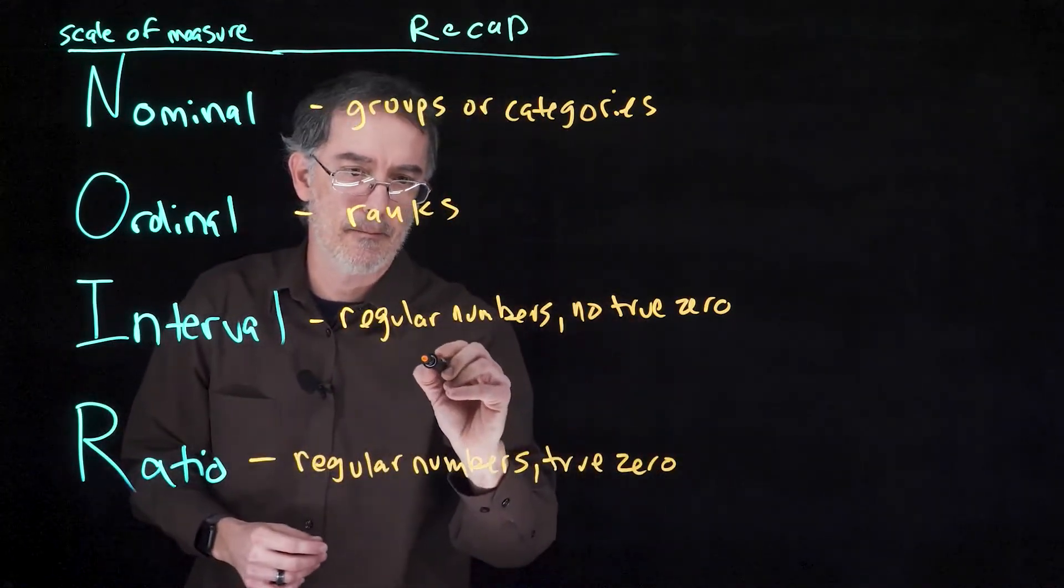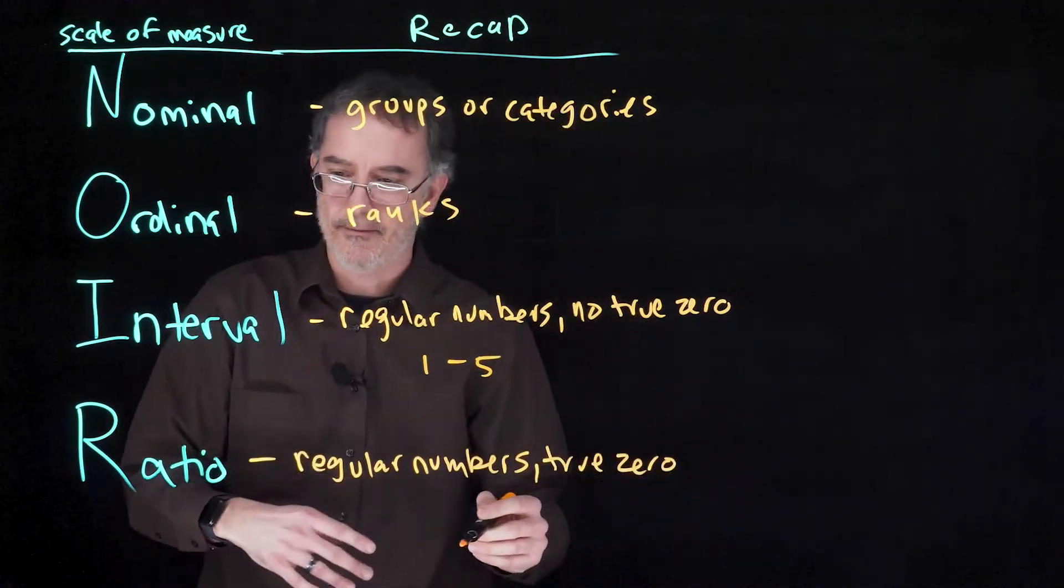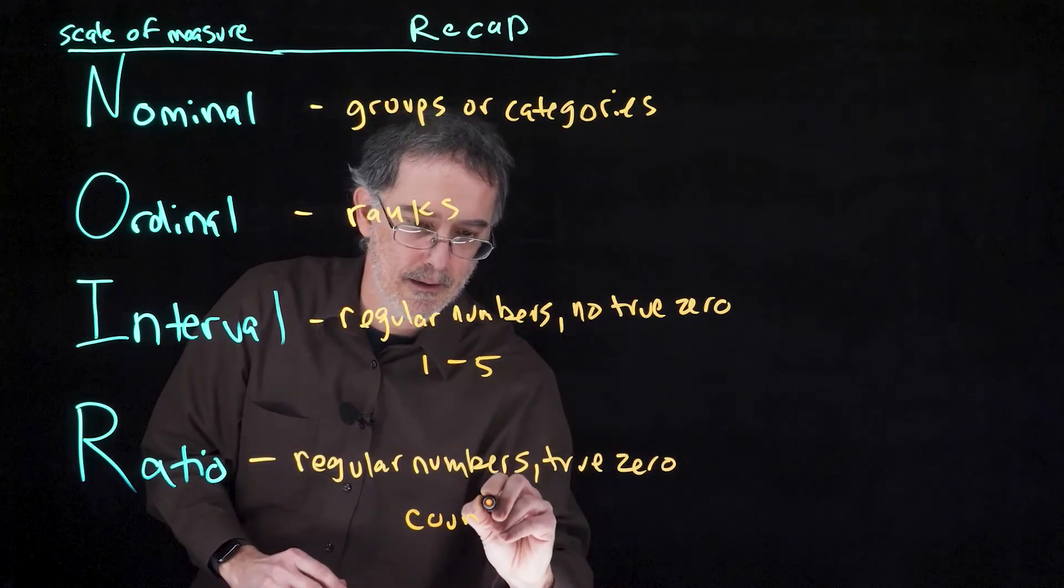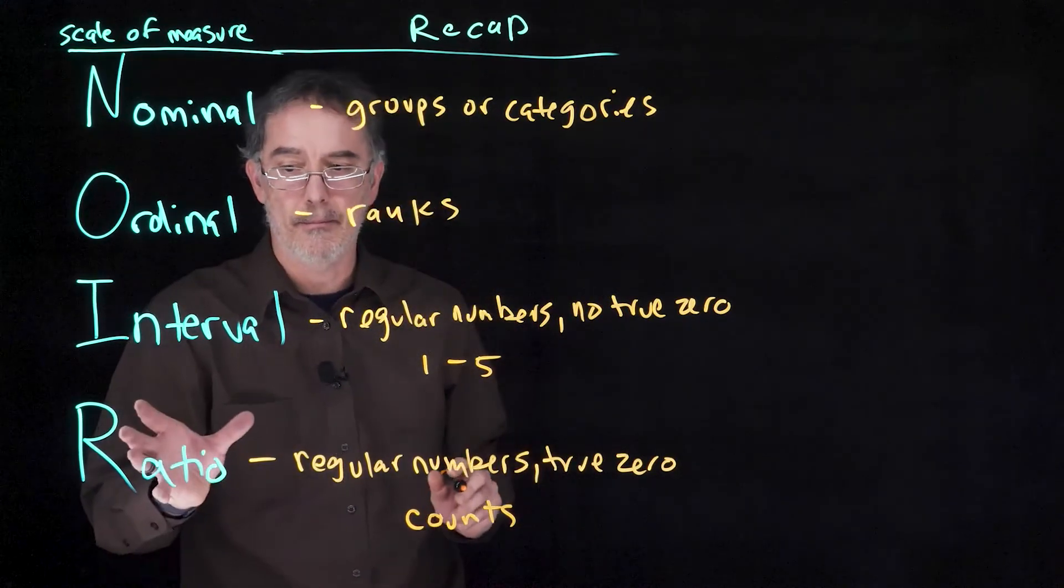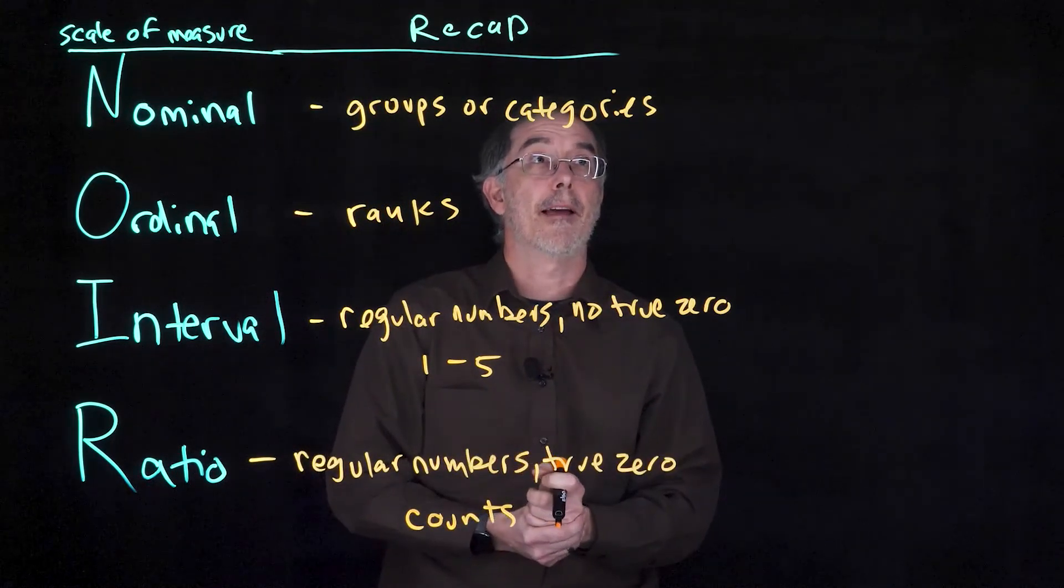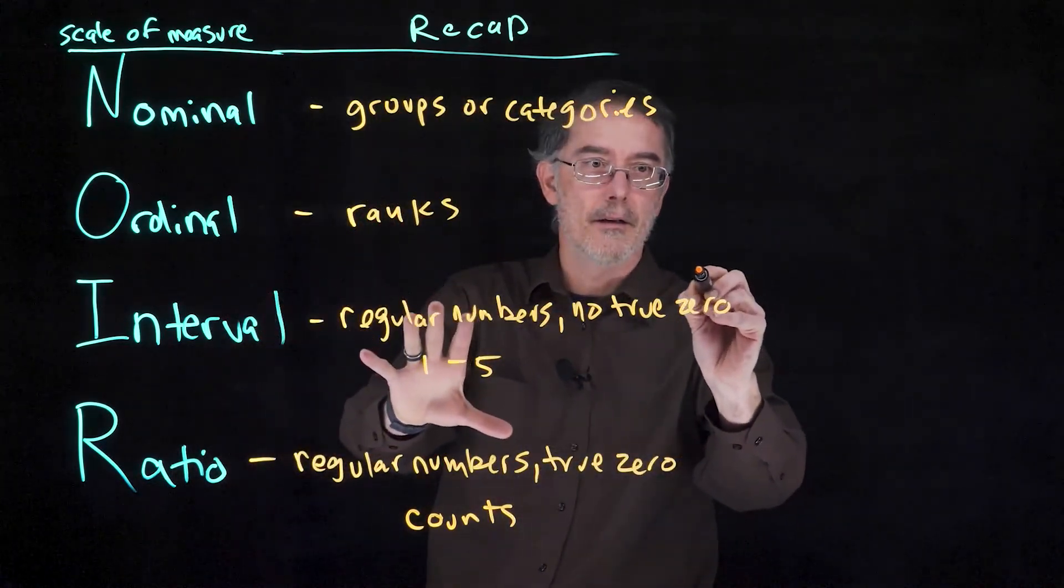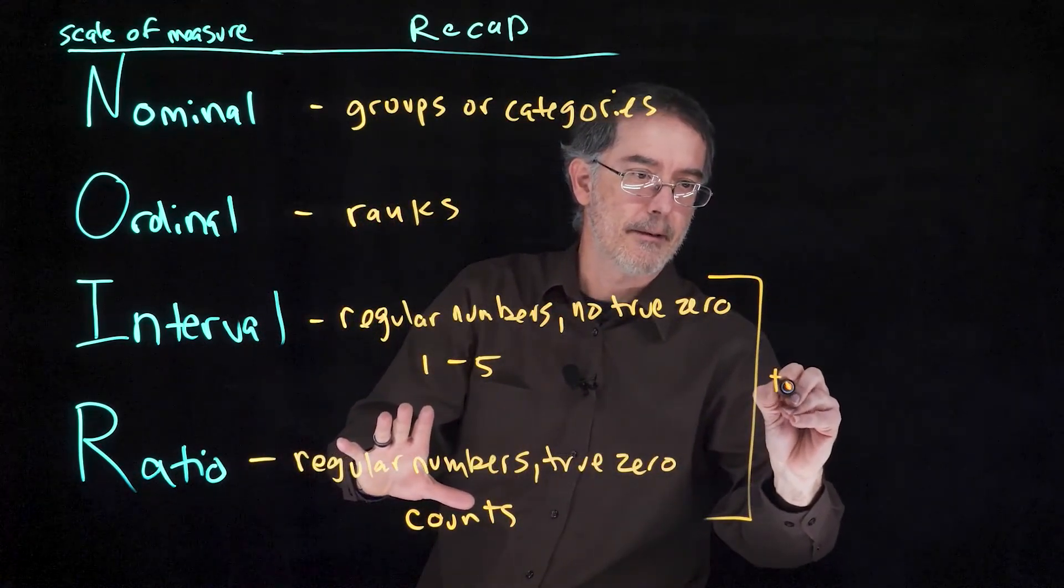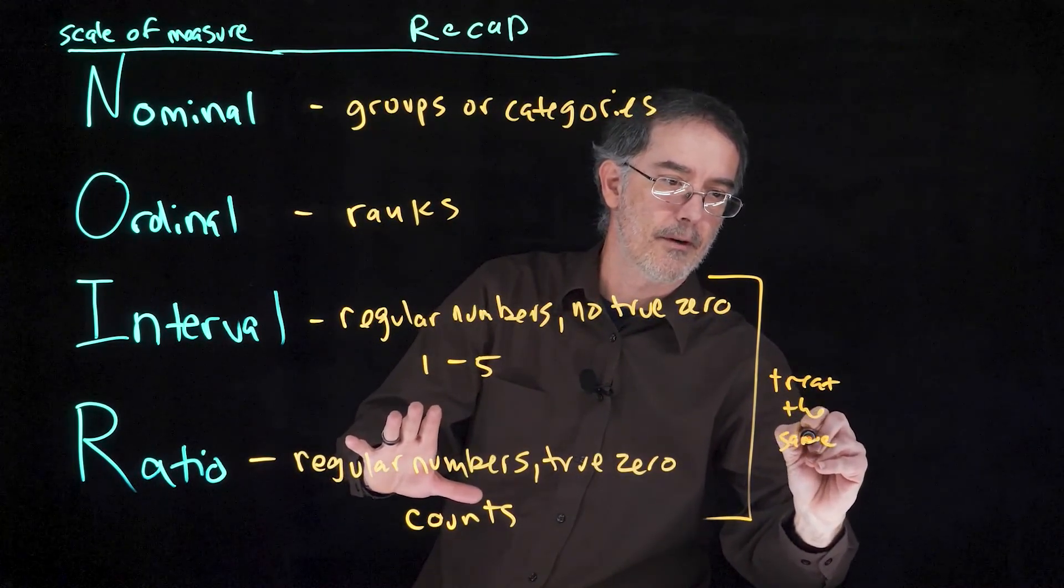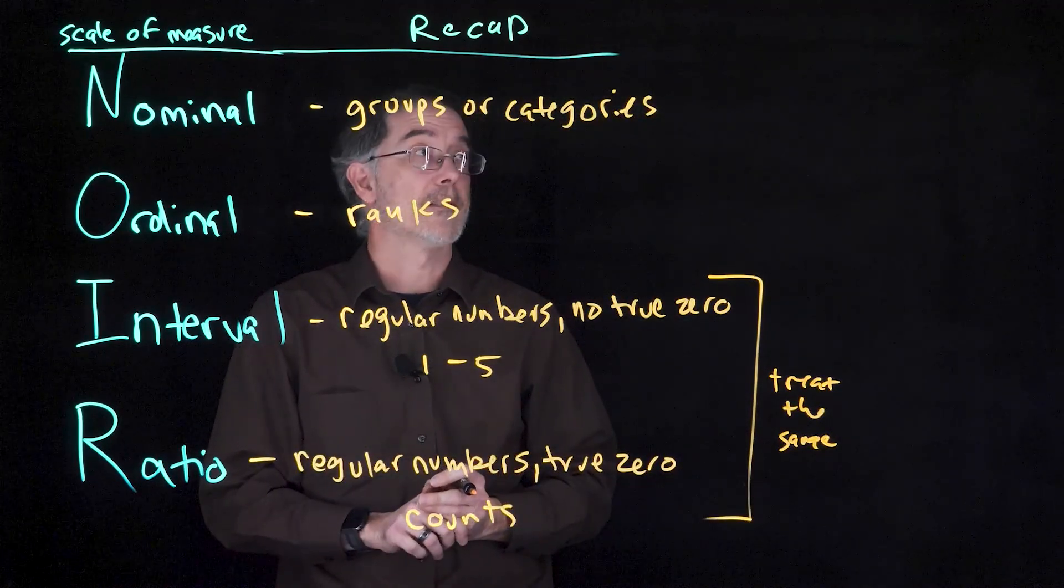For example, an interval scale might be on a 1 to 5 scale. How happy are you? Whereas for ratio variable, counts are a common kind of ratio, or measure of distance, or something like that. In psychology, we treat these the same. They are interchangeable when we do our statistics and stuff, but you will still need to know the difference between them for this class.